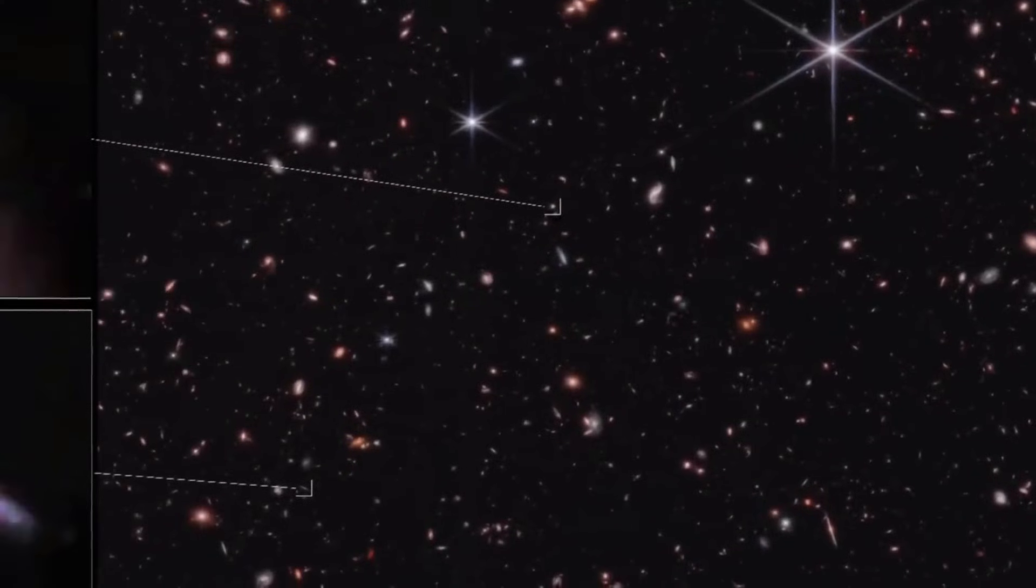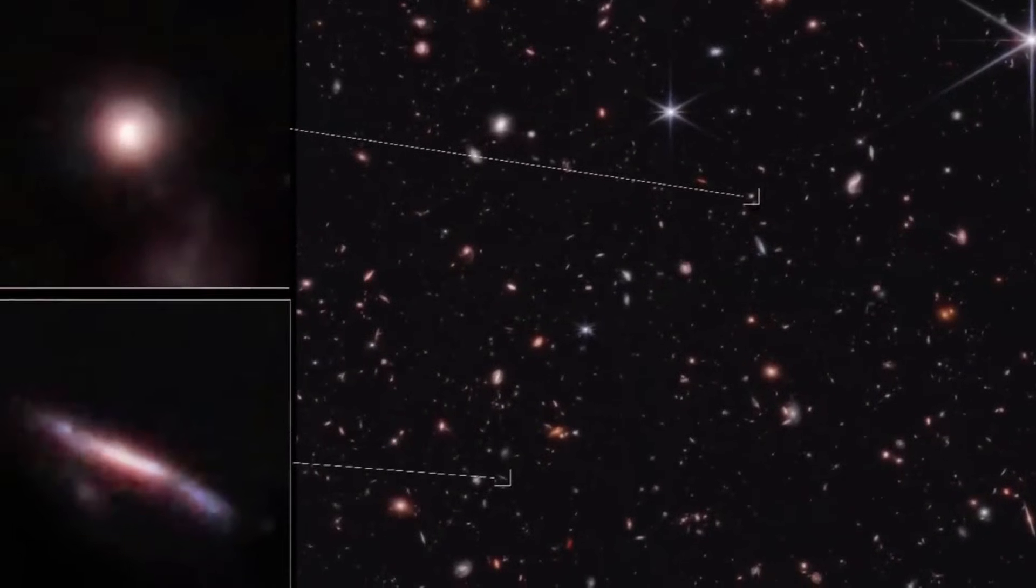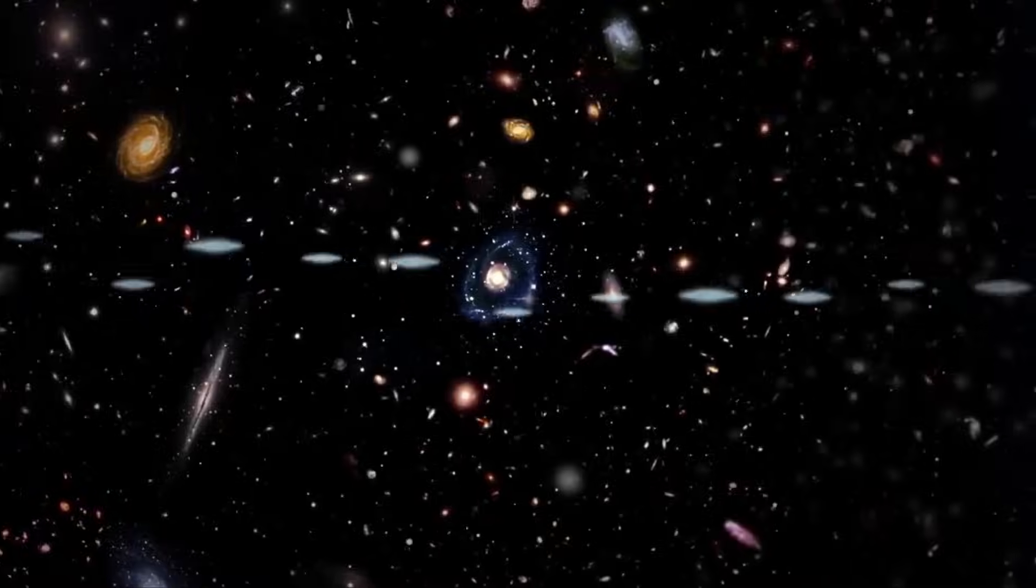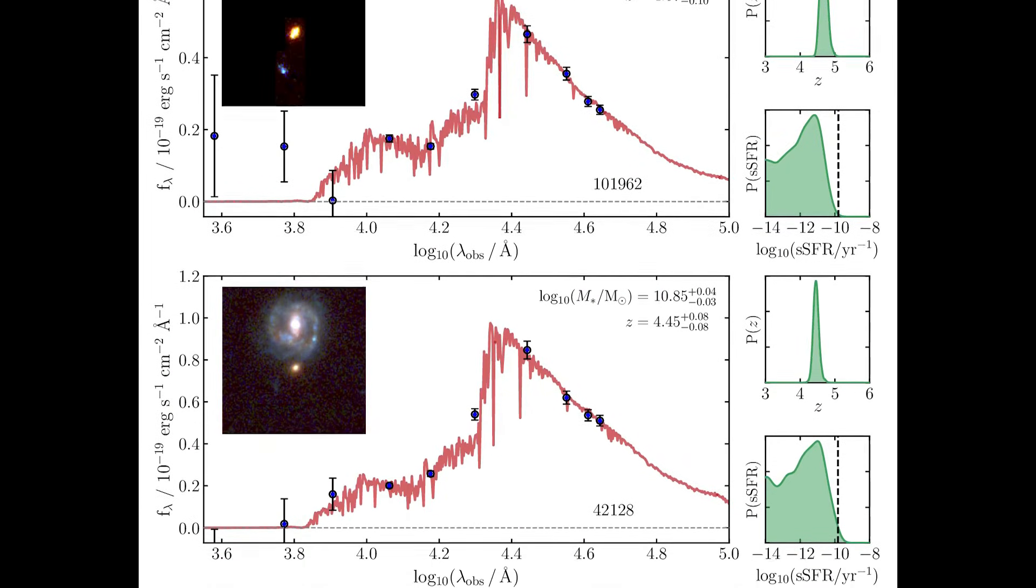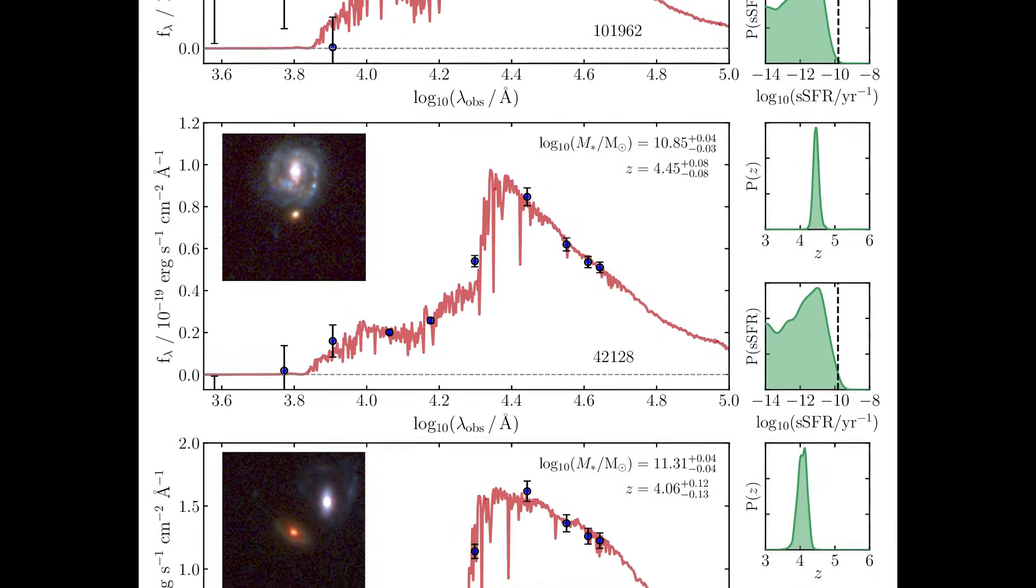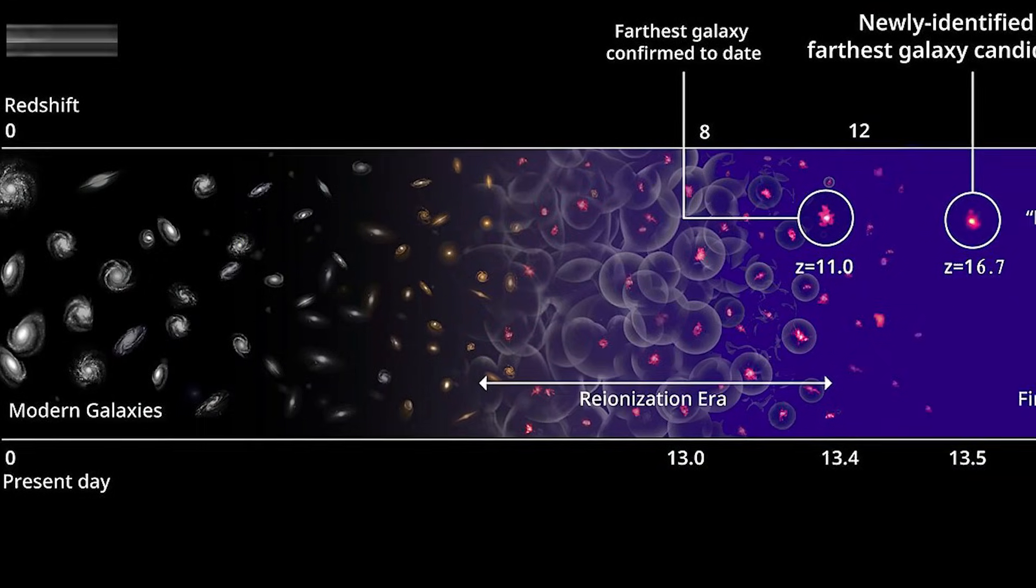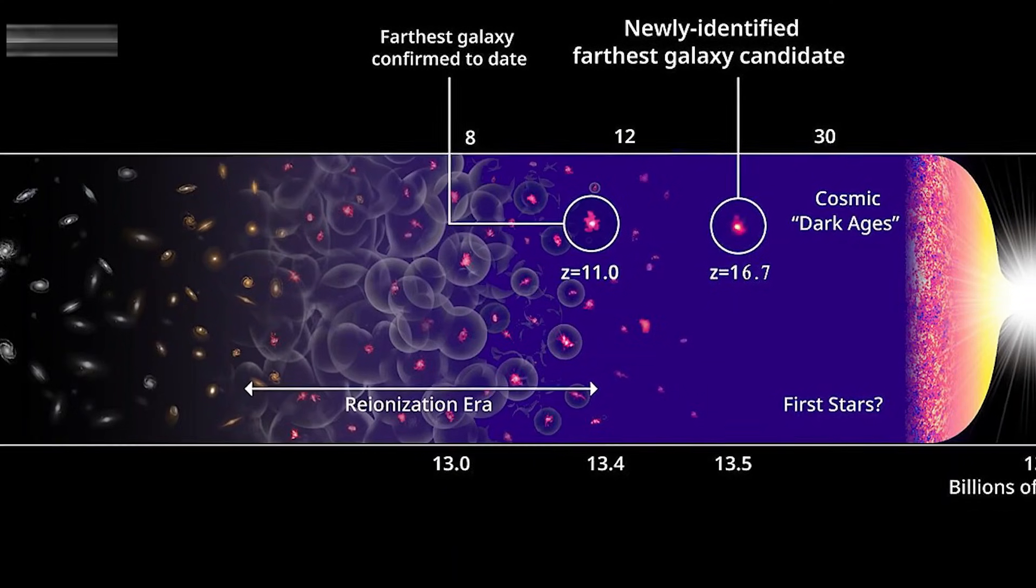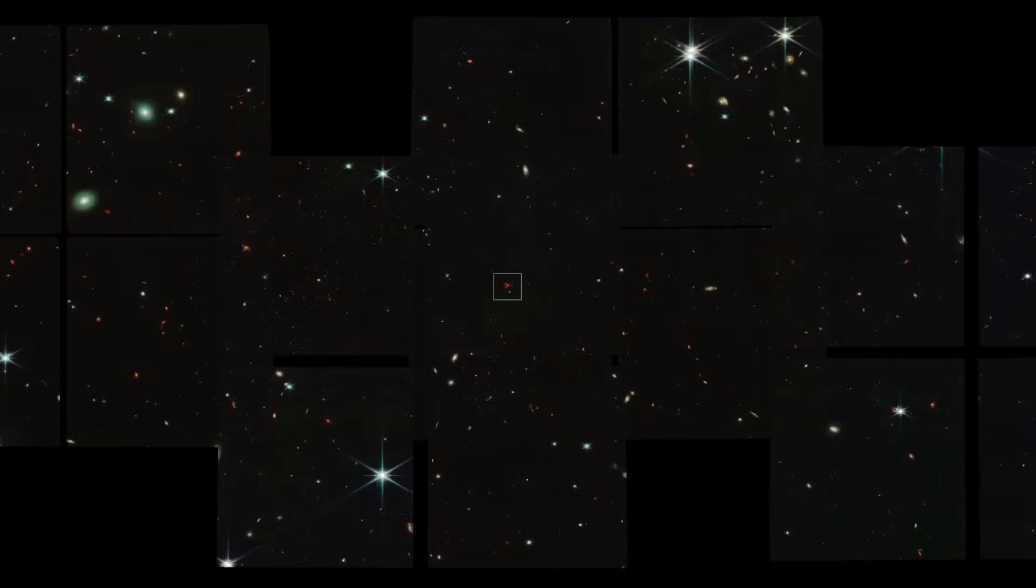Moreover, if remnants of previous universes can influence the birth of new ones, does that mean that the laws of physics, as we know them, are not universal constants, but rather variables that shift from one cosmic cycle to the next? These questions challenge our most basic assumptions about the nature of reality, and force us to confront the limitations of human knowledge.